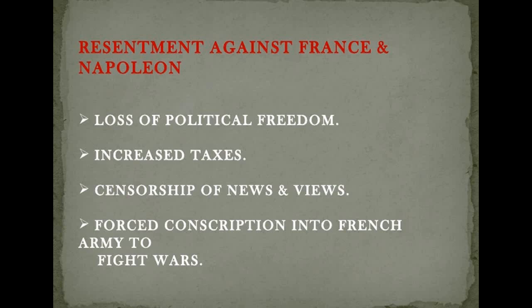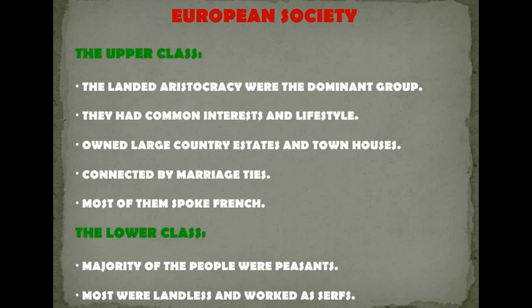All the political freedom was lost because the monarchists won. Taxes were increased, censorship of news was increased, and there was forced conscription into the French army to fight wars. So after 1815, when they had fought Napoleon, France went back to the system that was going on — basically the monarchical system in France and Europe.